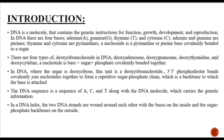In DNA, where the sugar is deoxyribose, this unit is called a deoxyribonucleotide. 3' to 5' phosphodiester bonds covalently join nucleotides together to form a repetitive sugar-phosphate chain, which is the backbone to which the bases are attached. Nucleotides are linked together by 3' to 5' phosphodiester bonds, creating a continuous sugar-phosphate backbone that provides structural stability.